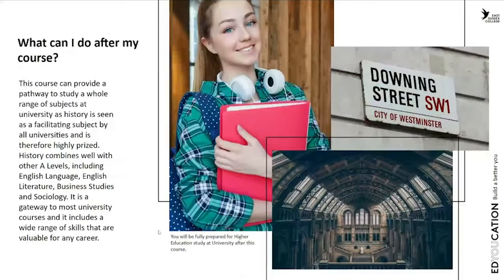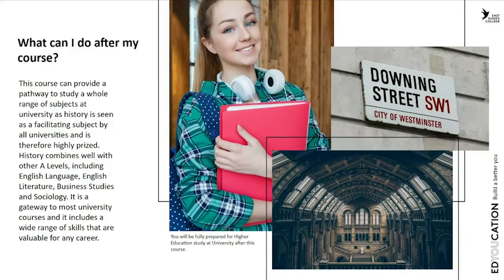What can you do after your course? This course can provide a pathway to study a whole range of subjects at university. History is seen as a facilitating subject by all universities and is therefore highly prized. History combines well with other A-levels including English language, literature, business studies and sociology. It is a gateway to most university courses and includes a wide range of skills that are valuable for any career.